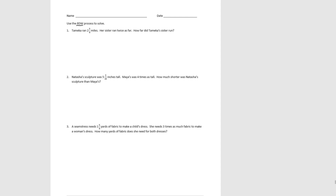We'll do number one together. Tamika ran two and five-eighths miles. Her sister ran twice as far. How far did Tamika's sister run? So let's go to the draw part now and do a tape diagram.